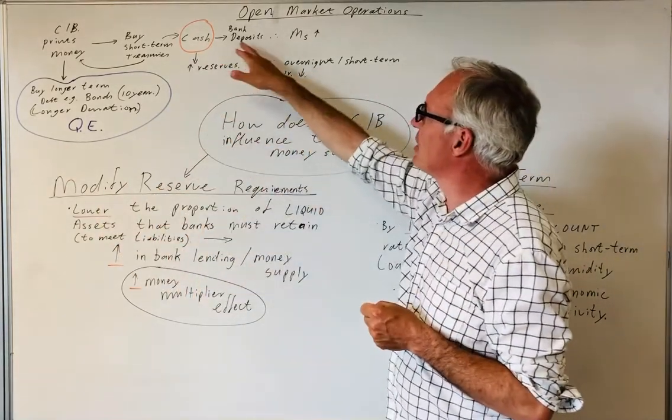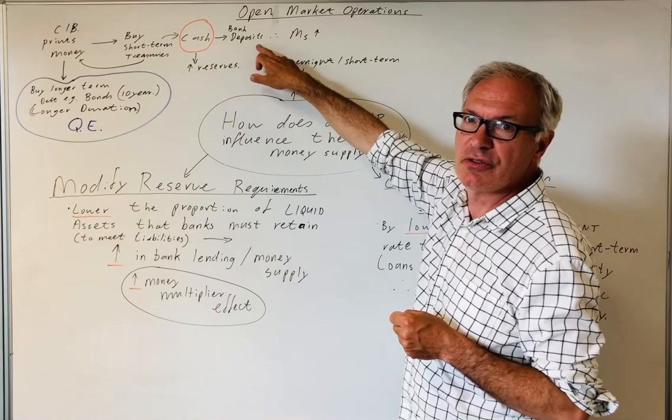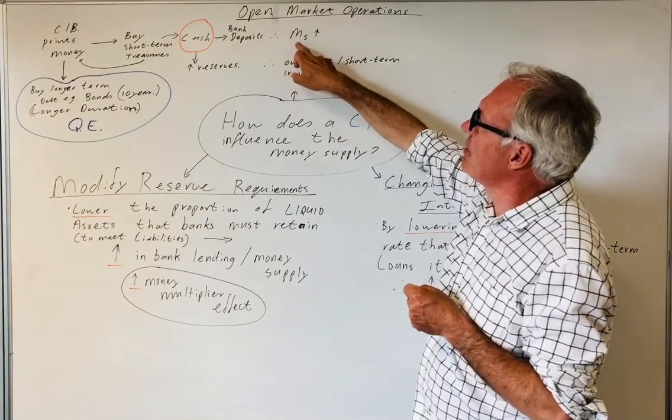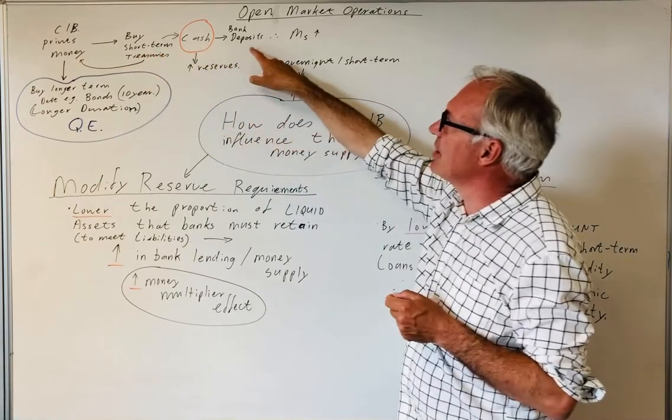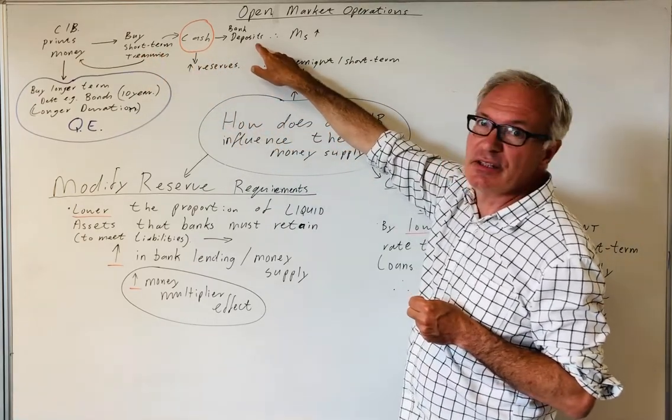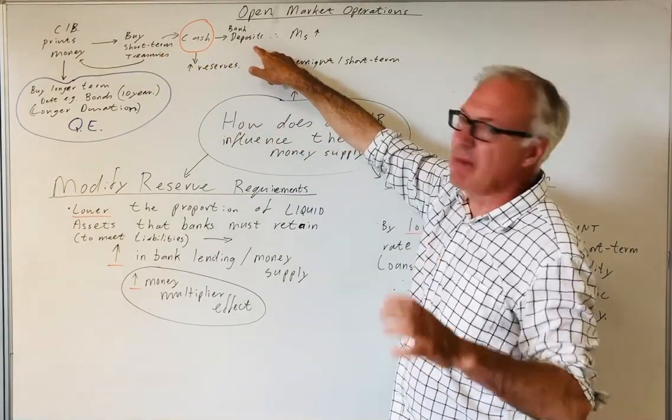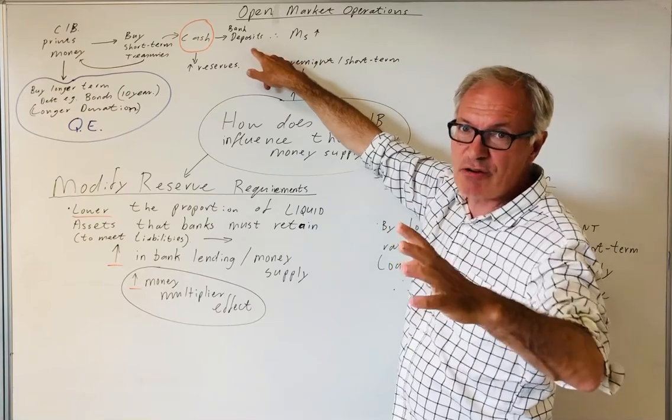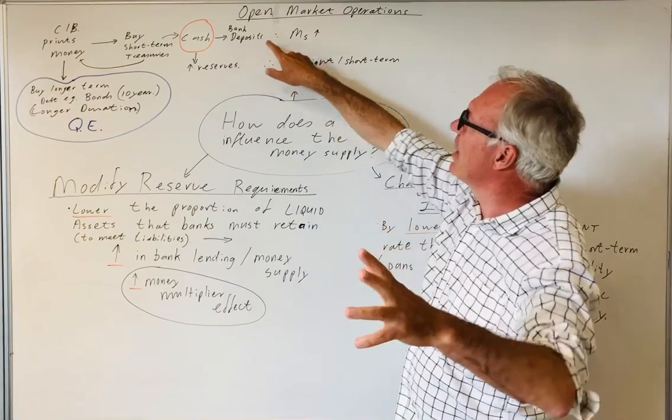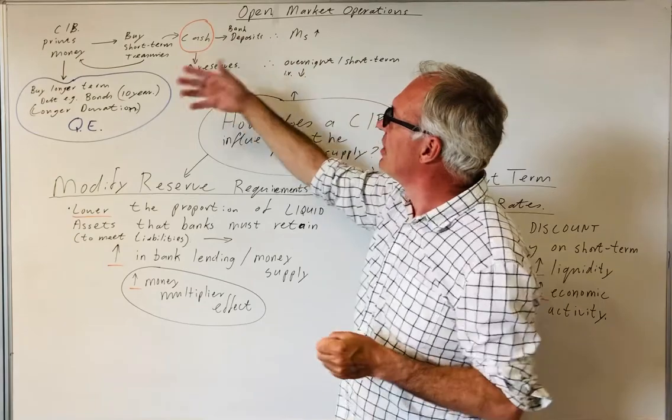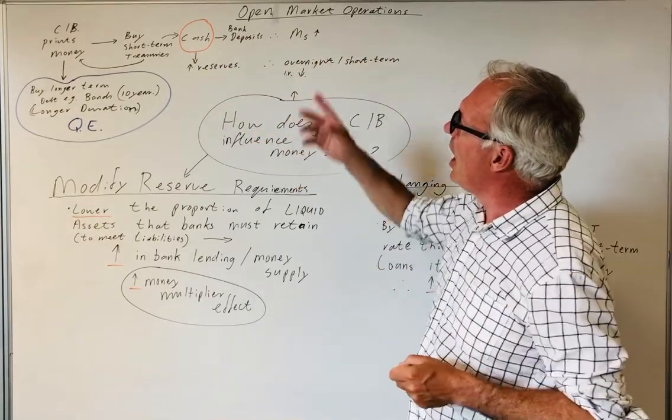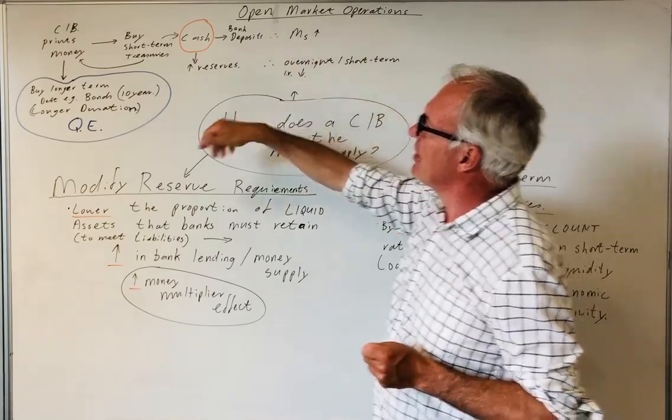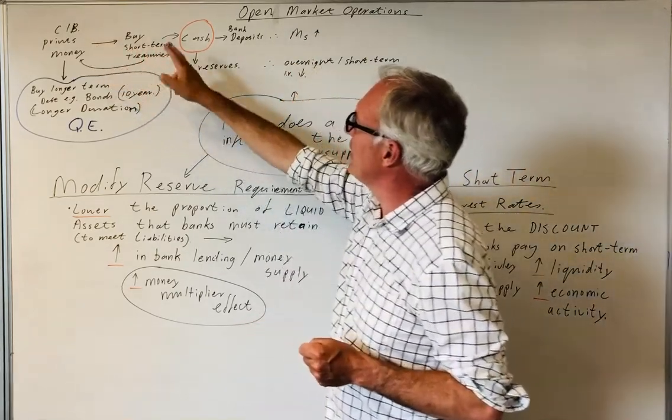In exchange for short-term treasuries it provides cash, and the cash then is circulated in the economy and becomes new bank deposits, which then increases the money supply. So basically they're increasing the monetary base, M0 as a measure of the monetary base and a narrow measure of the money supply, and then that results in an overall increase in the money supply.